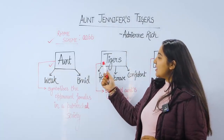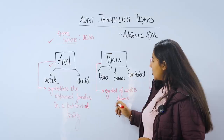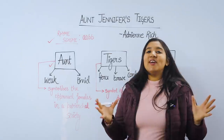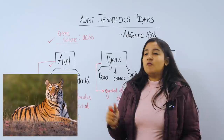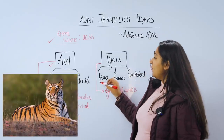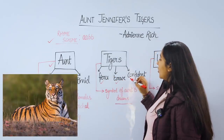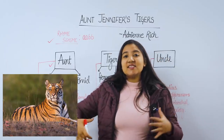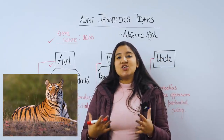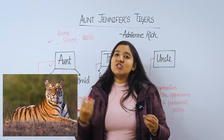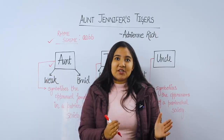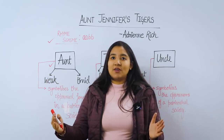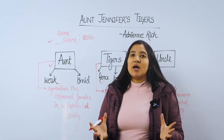These tigers represent her dreams and aspirations. These tigers are very fierce, brave, and confident — these creatures are described as such because Aunt Jennifer wanted them to be that way. She is creating this tapestry through her own alternate world weave.